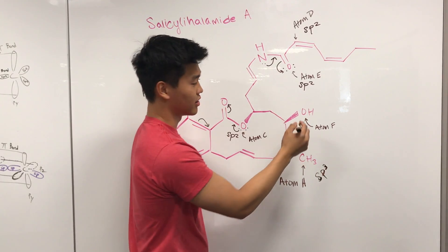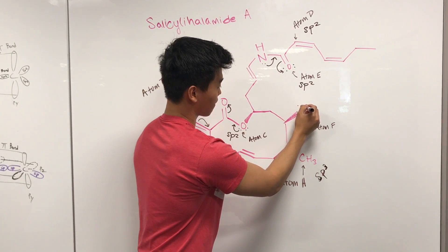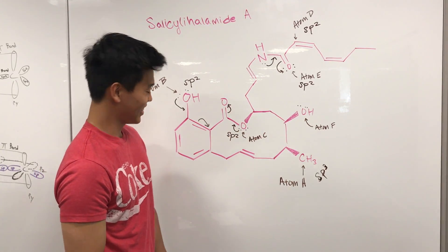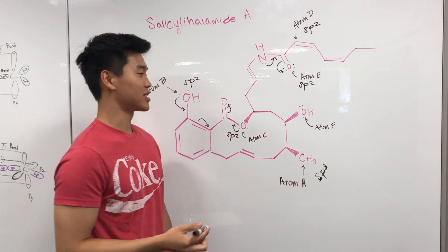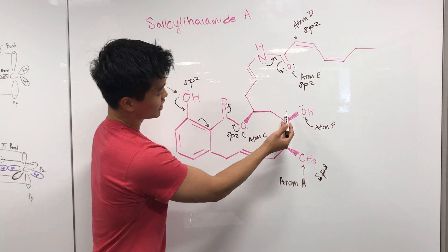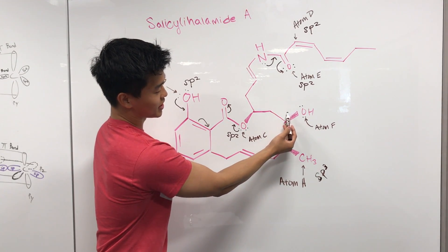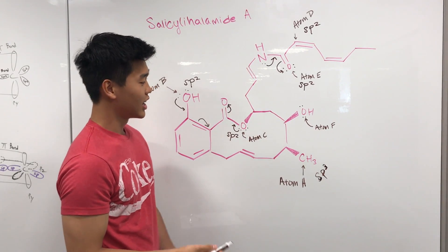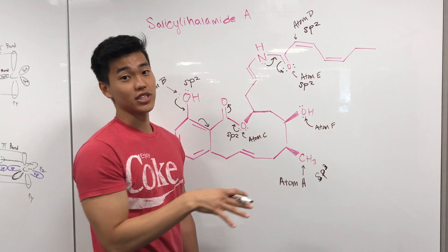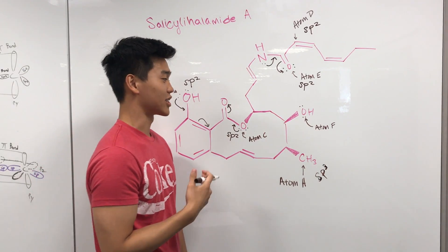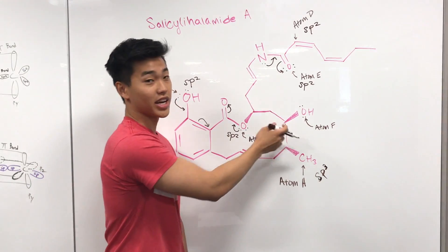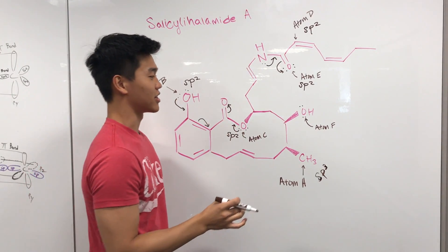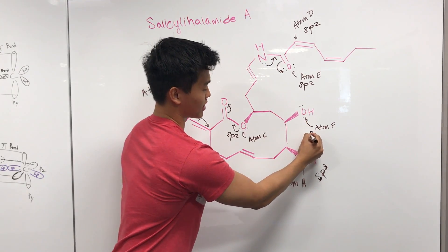The last one, atom F — drawing in the lone pairs. Can any resonance structures form? You can't push these lone pairs onto the adjacent carbon because it would be overloaded, and the electrons have nowhere else to go. So no resonance structures are possible even though it's an electron-donating oxygen. You can't assume all electron-donating oxygens can push electrons somewhere — you have to verify. Atom F is sp3 hybridized.